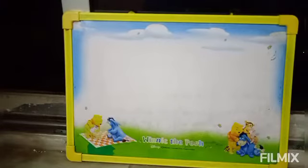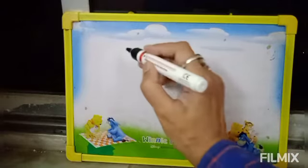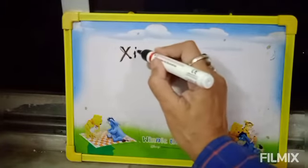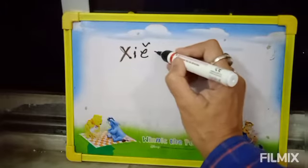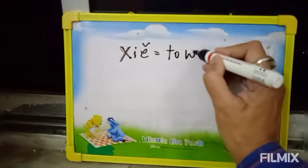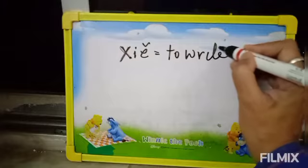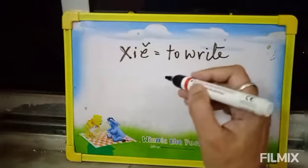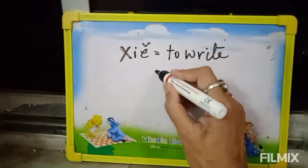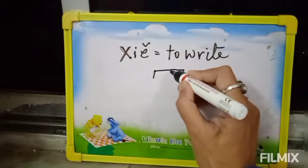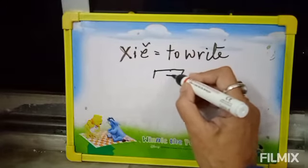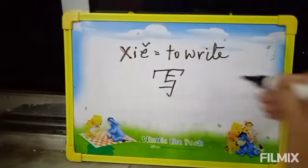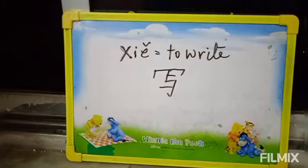The next character is CA. The English meaning is to write — to write something. I am showing you how to draw this character. This is the character CA.